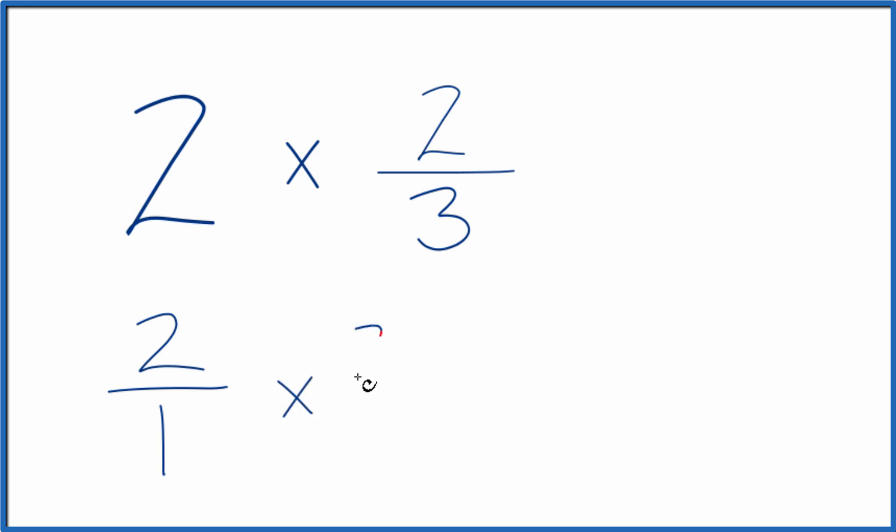Then we can multiply that times two-thirds. When we multiply fractions, we multiply the numerators and then the denominators. Two times two is four, and one times three is three.